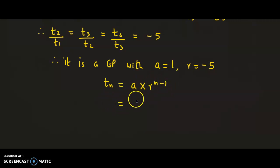Substituting A = 1 and R = -5, we get Tn = 1 × (-5)^(n-1). So Tn = (-5)^(n-1).